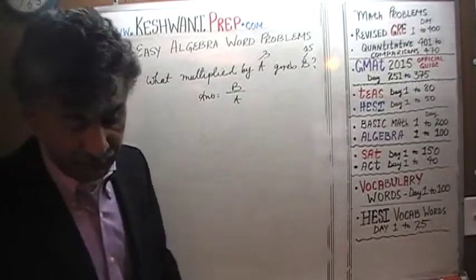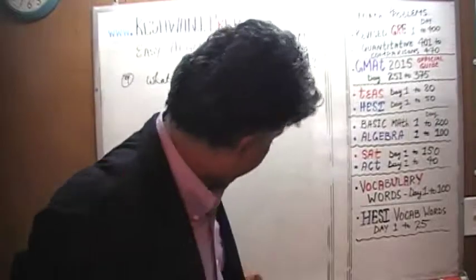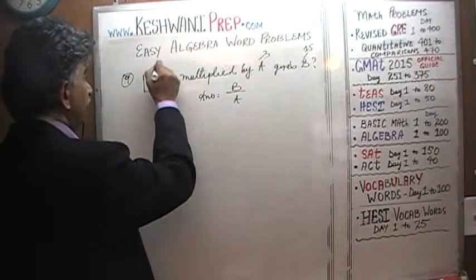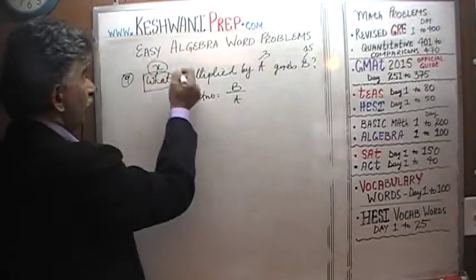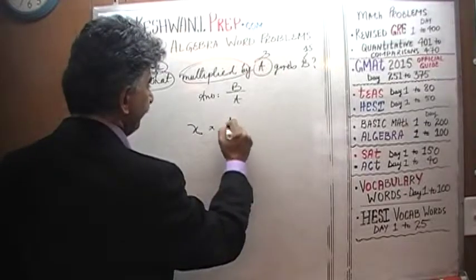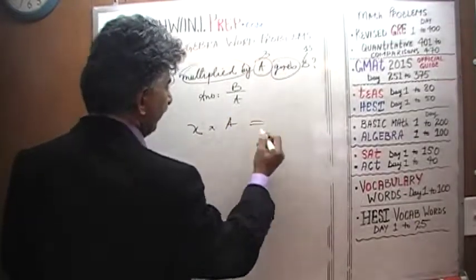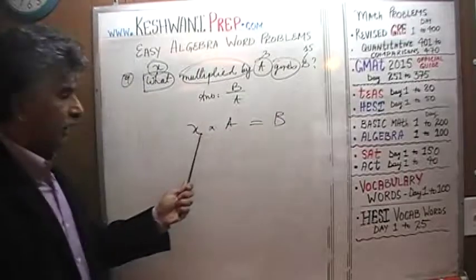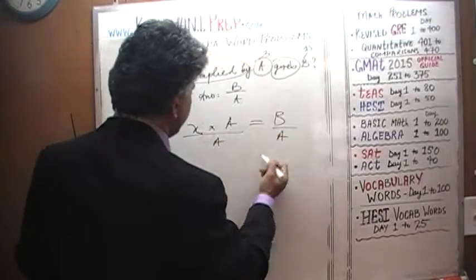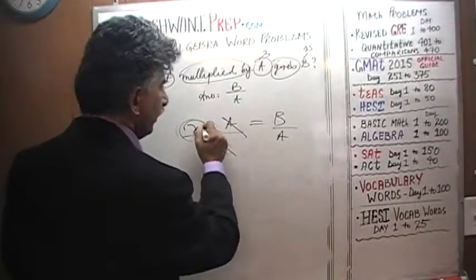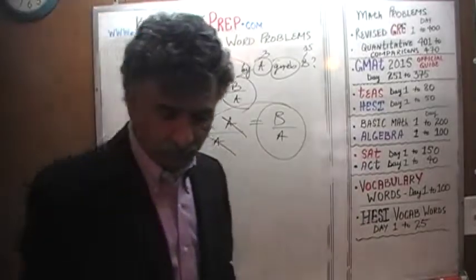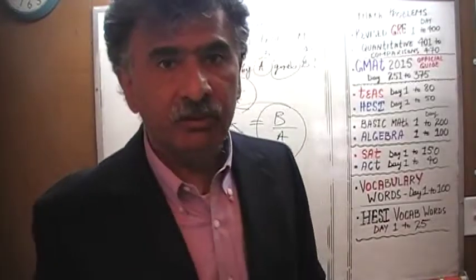If you want to do it in a more traditional, classical, academic method, you show your work by saying: the unknown, let's call it X. What multiplied by A gives — which is the same as equals — B. And we solve for X by dividing both sides by A. A goes out and your X, the unknown quantity, is B over A, which is what we just said. It's a very straightforward question — very simple.